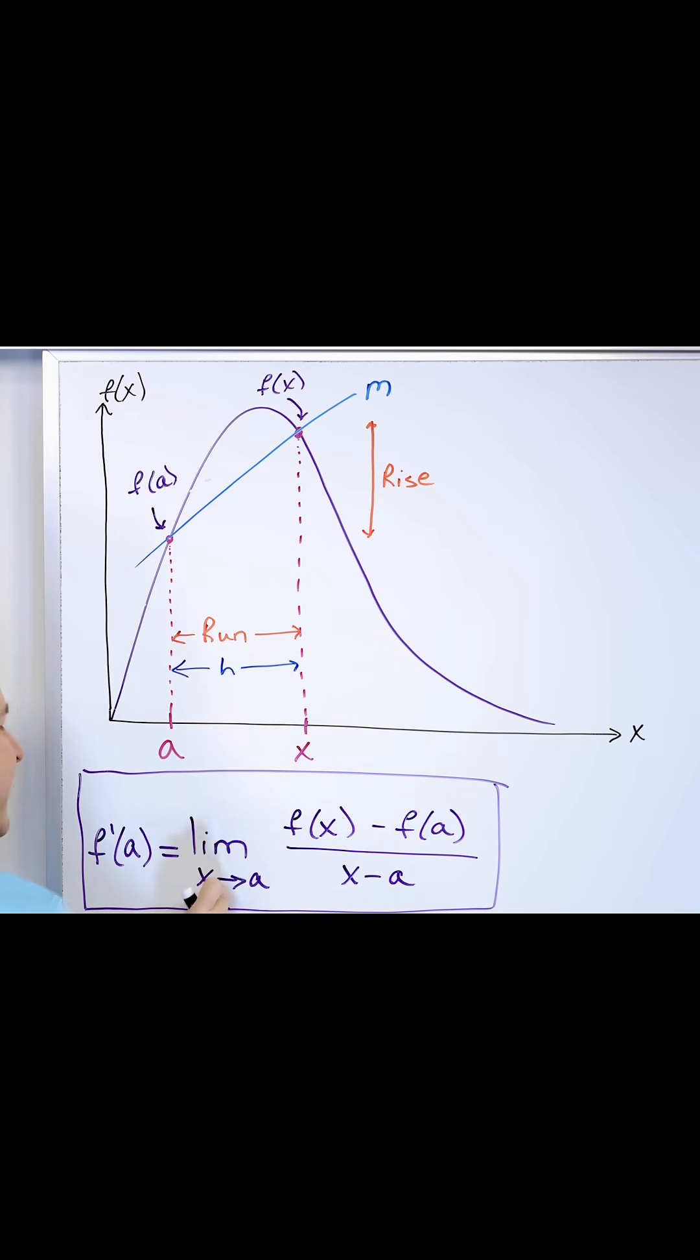The limit as x approaches a gives us the derivative, which is the slope of the line tangent at exactly that point there.